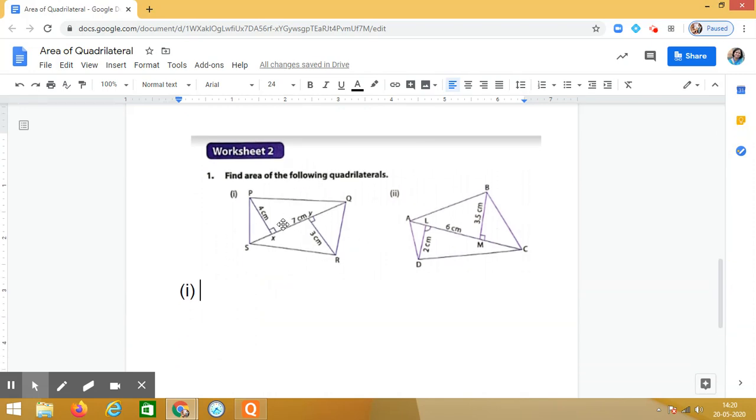So here the quadrilateral is PQRS. It is given the diagonal QS is 7 centimeters, and in triangle PSQ altitude is 4 centimeters, and in triangle QSR altitude is 3 centimeters. So we have to find the area of quadrilateral.